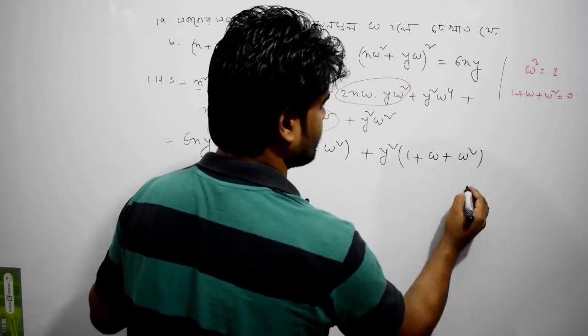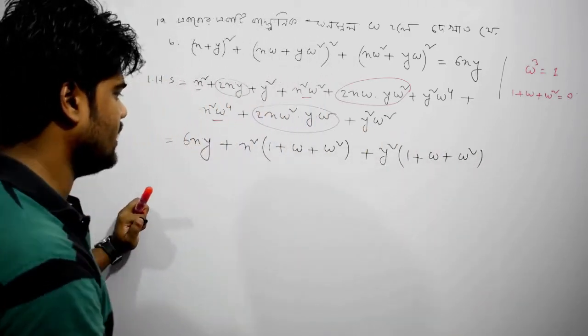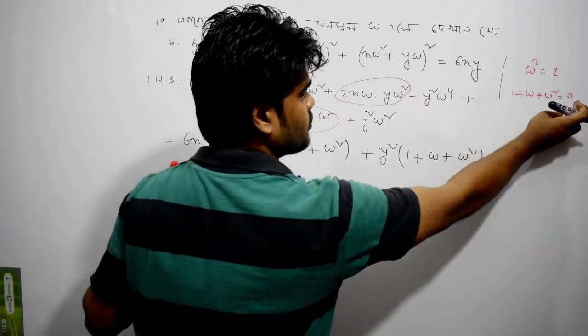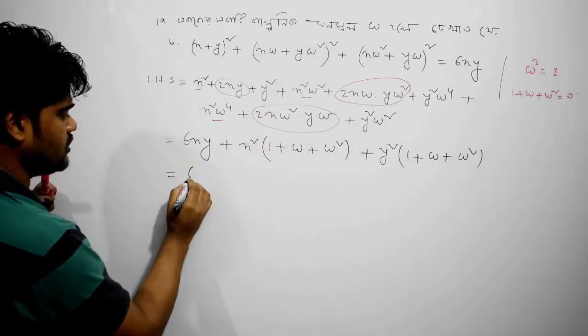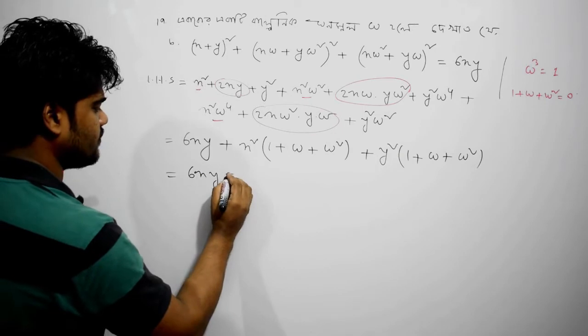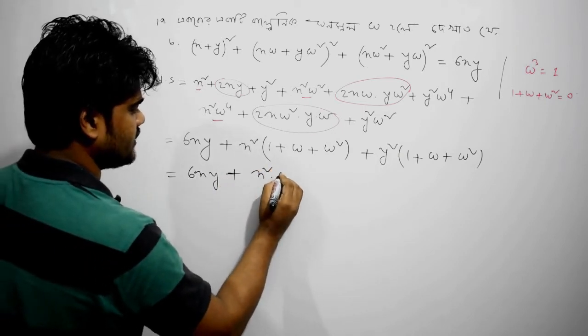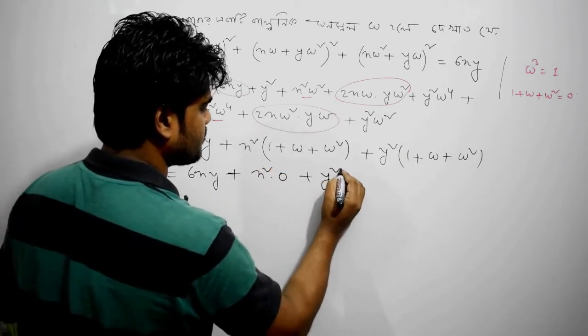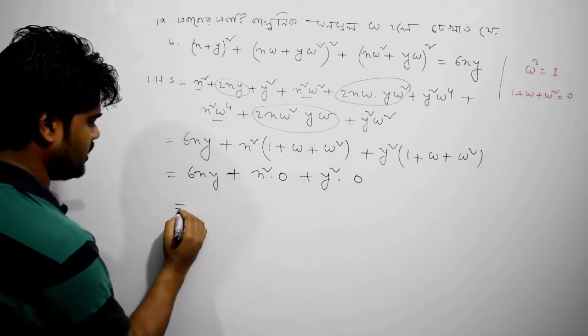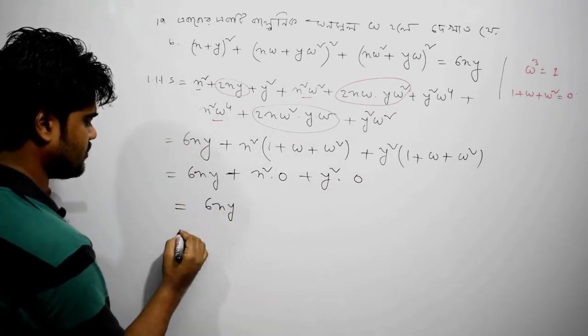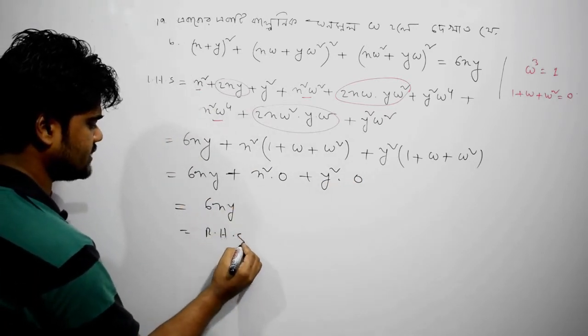Omega omega omega, this equals what? 0. So 6xy plus x square into 0 plus y square into 0. What is equal to? 6xy. This is R is S.